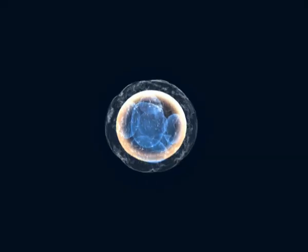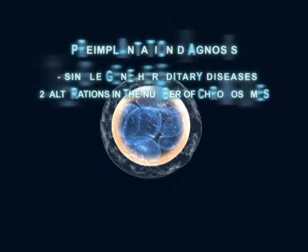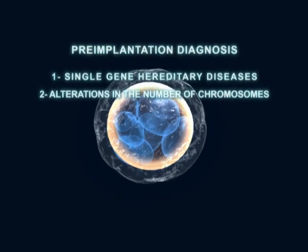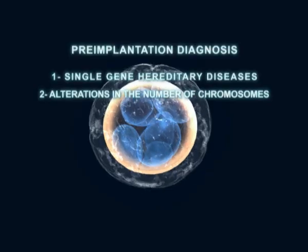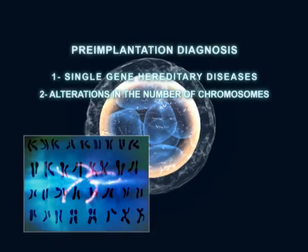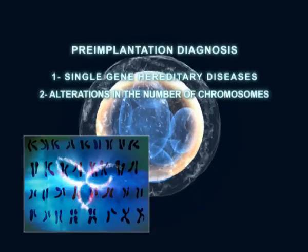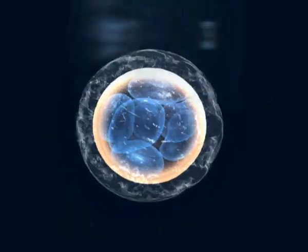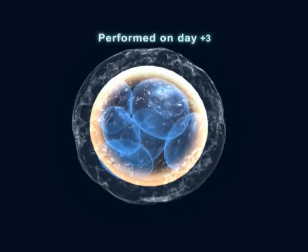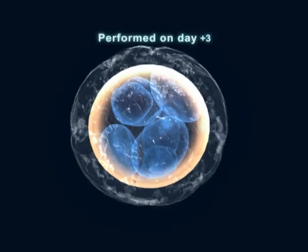Genetic pre-implantation diagnosis allows the detection of embryos that are affected by inherited single gene diseases, such as those that are due to changes in the number of chromosomes. This is performed in embryos grown in vitro on day 3 of development.